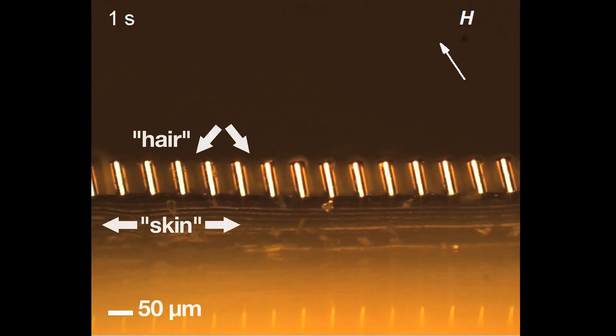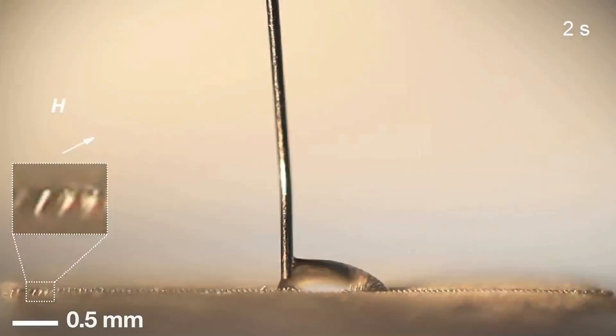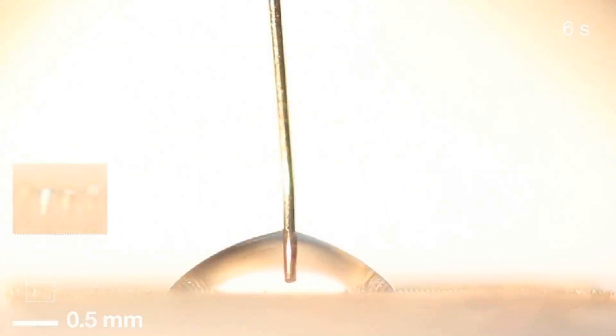The orientation of these micro-pillars can be controlled by an external magnetic field. The micro-pillars tilt in the direction of the magnetic field, and as a result, the pillars can control the direction in which fluid spreads through the material.